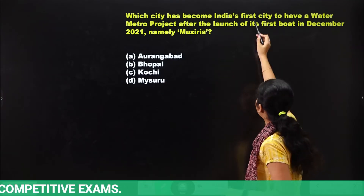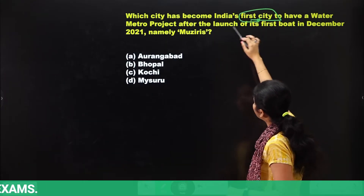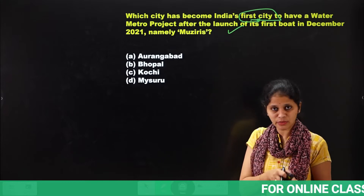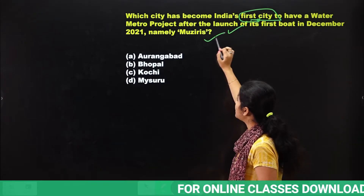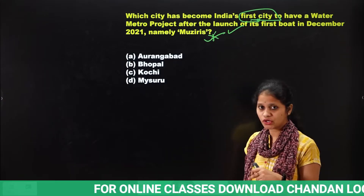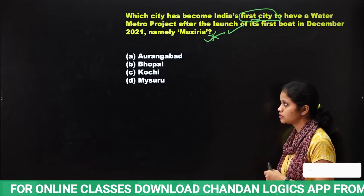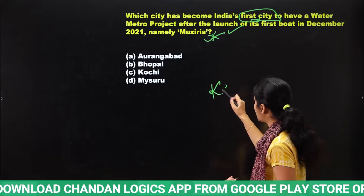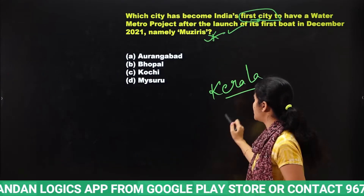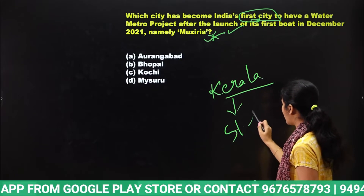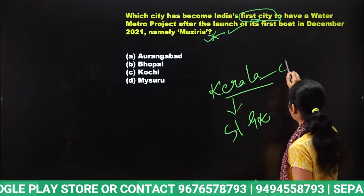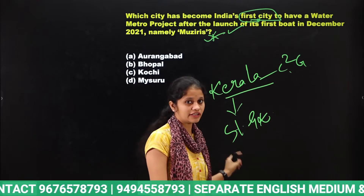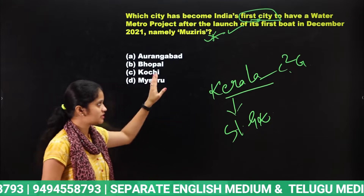Which city has become India's first city to have a Water Metro project after the launch of its first boat in December 2021, namely Muziris? Looking at the options — Aurangabad, Bhopal, Kochi, or Mysore — the clue is that it is in the state of Kerala. Try to answer the static GK of Kerala as well — that is C-square-G: Capital, Chief Minister, and Governor of Kerala — in the comment section along with your answer.